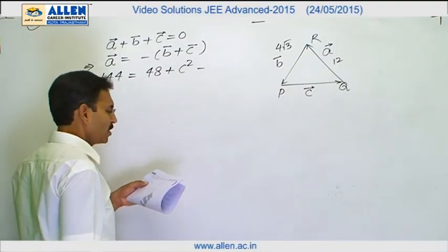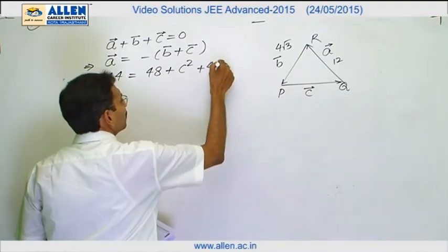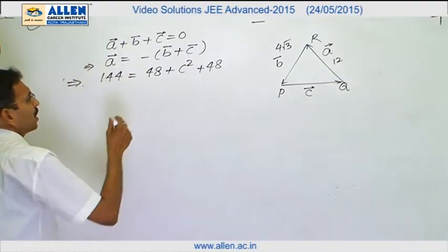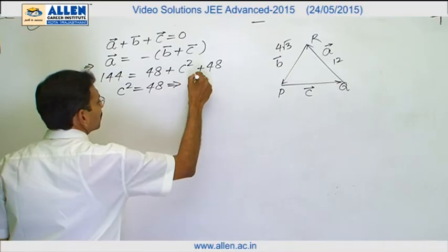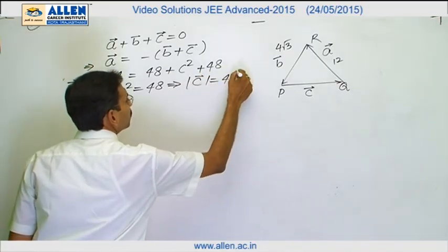b dot c is 24. So it is again 48. So c square is also 48 implies the magnitude of vector c is 4 root 3.